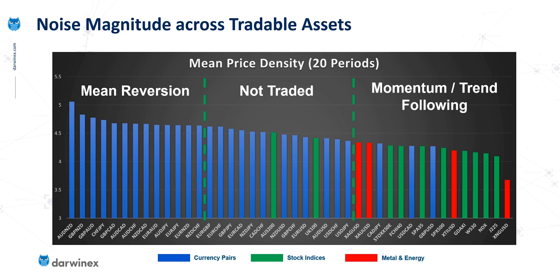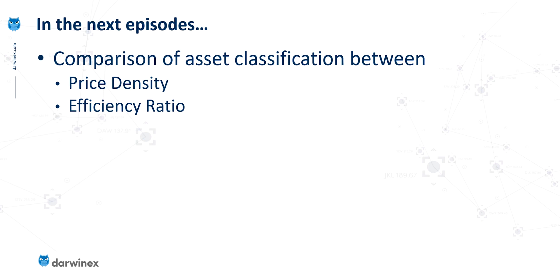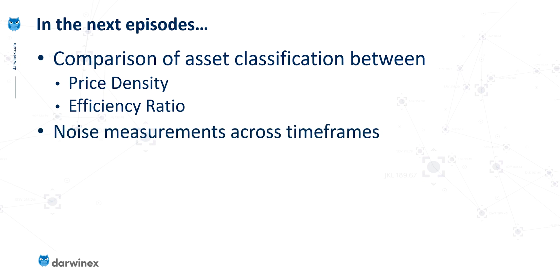Before I do that, we haven't looked at the efficiency ratio yet. In the next episode, I'll be doing a direct comparison between the classification that the price density gives us with that of the efficiency ratio by Perry Kaufman. And looking one more episode ahead, I'll be doing the same but instead of across assets, I'll be looking at how noise changes across timeframes, because this is another area where we can turn noise to our advantage.